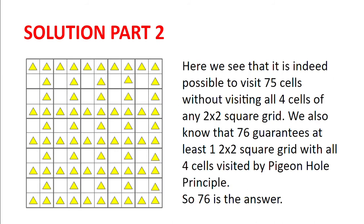Here we see that it is indeed possible to visit 75 cells without visiting all 4 cells of any 2x2 square grid. We also know that 76 visited cells guarantees at least one 2x2 square grid with all 4 cells visited by the pigeonhole principle. And so, 76 is the answer.